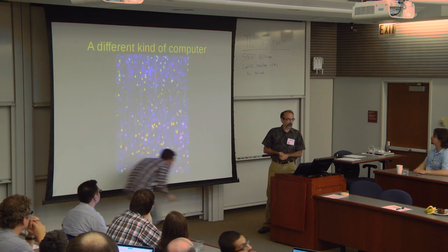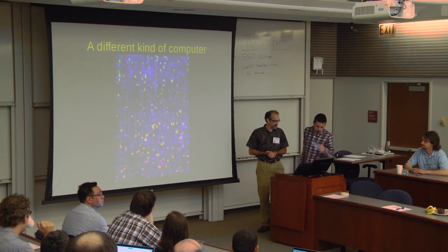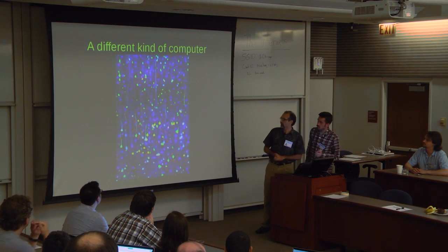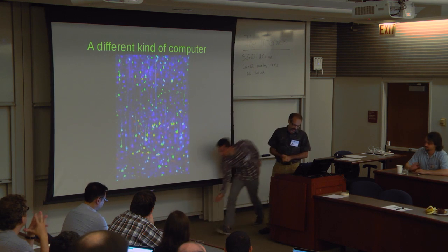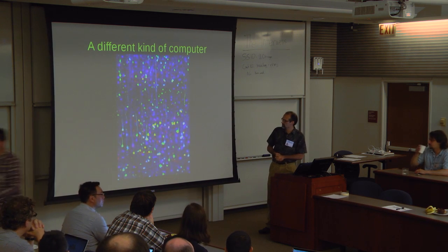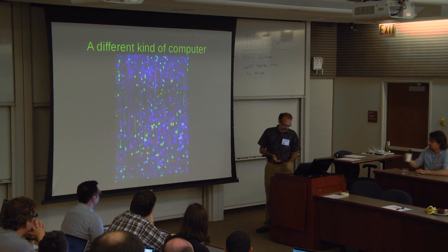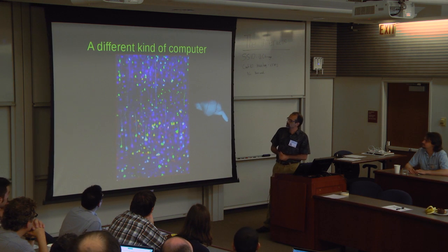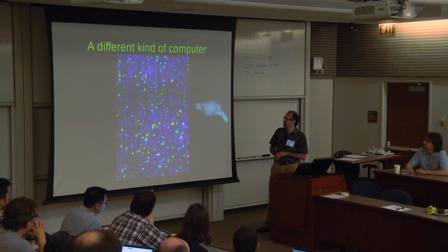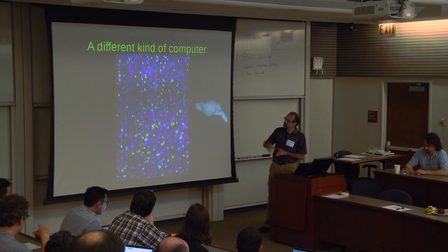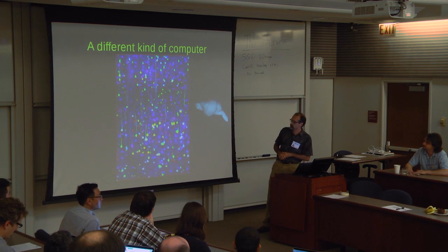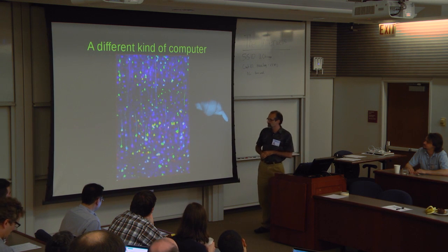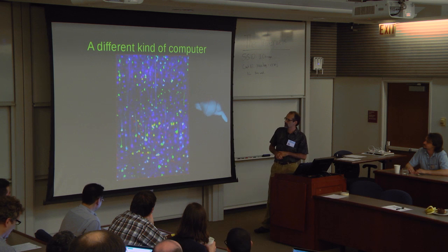But I'm here because of my interest in a different form of computing, and that is the computing that the brain does. And actually maybe for this early part, can we have the lights down just a bit? So the brain is arguably the most complicated computing device that there is in existence. And what I'm showing you here is an image of actual brain. This is a tiny segment from the brain of a mouse.